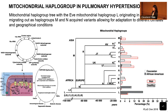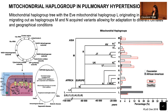Since mitochondria are so important for metabolism and energy production, we were interested in looking at mitochondrial haplogroups in association with pulmonary hypertension. The mitochondria has its own circular DNA, which is inherited exclusively maternally — all mitochondrial DNA comes from our mothers. The mitochondrial repair mechanism is very limited, so many mutations accumulate over time. Some of these mutations are beneficial, helping us adapt to climate and bioenergetics, and are retained in humans.